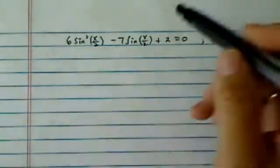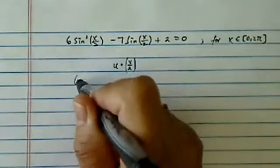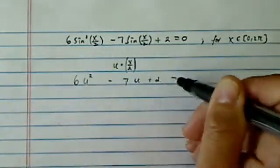This is a very interesting trig equation. First thing we're going to do is substitution for variables. So we have 6u squared minus 7u plus 2 equal to 0.